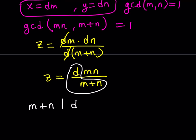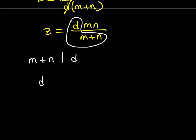What is that supposed to mean? Think about it for a minute. Well, m plus n divides d means d is a multiple of m plus n. And I can write it as d equals m plus n multiplied by a positive integer k. Now, how does this help us?